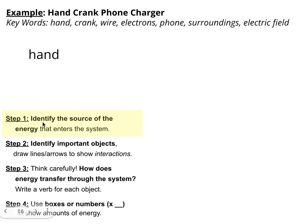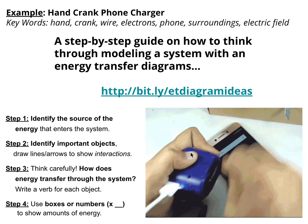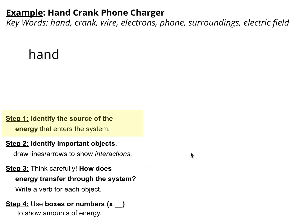So if I'm thinking about the source of energy that enters the system, where is the energy coming from? In this case, it's clearly coming from his hand, like his hand is making things happen. So step 1 is just identify the source of the energy. In this case, I write the word hand.